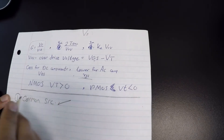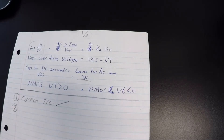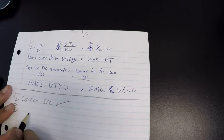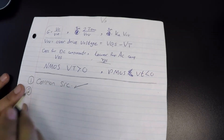For part two, we do a DC analysis. We're given the drain current ID which is 1 milliamp, and we have to find RS so that the overdrive voltage and ID are equal to the given specs. For a DC analysis, all capacitors will be shorted and all AC power sources will be shorted as well.